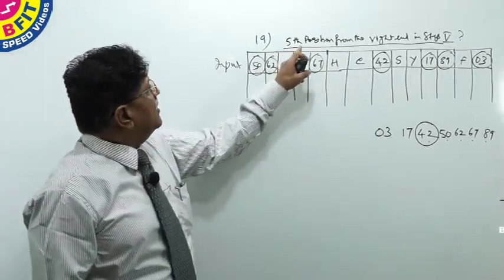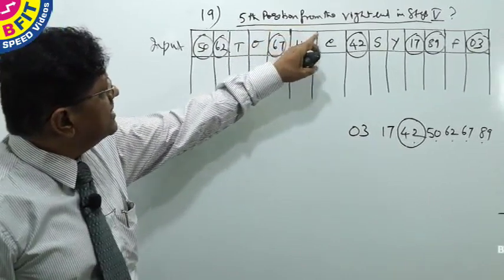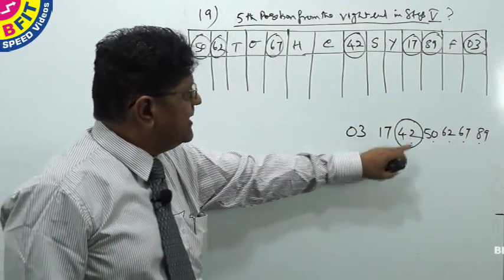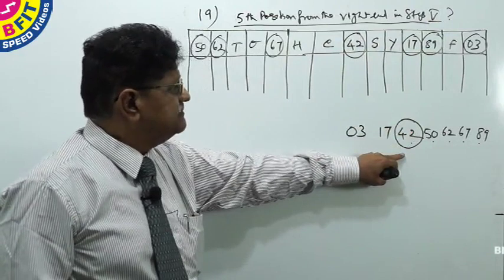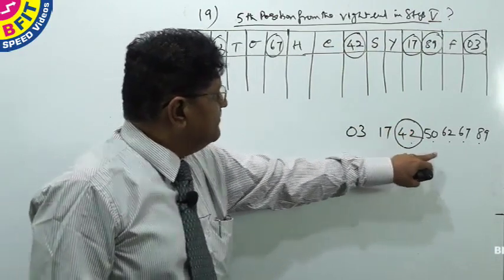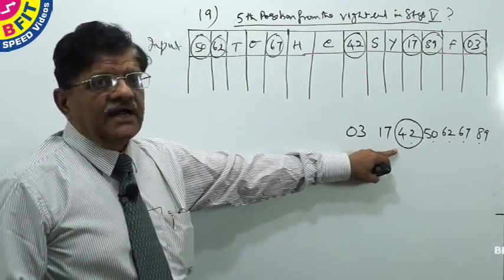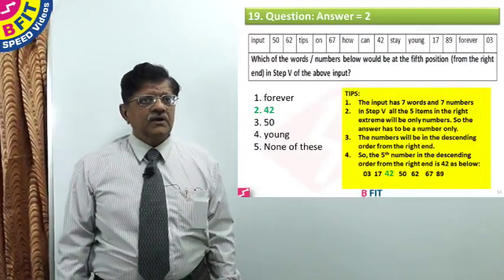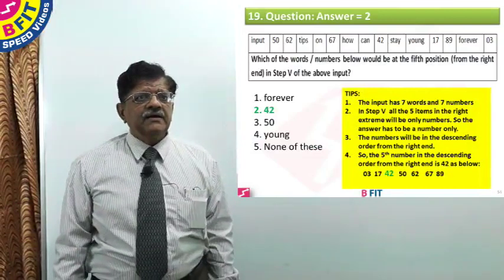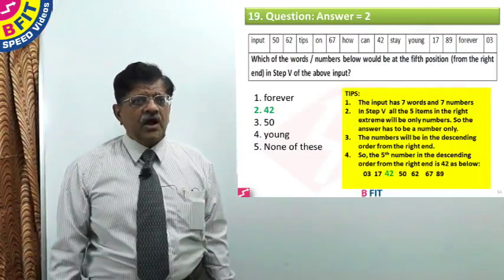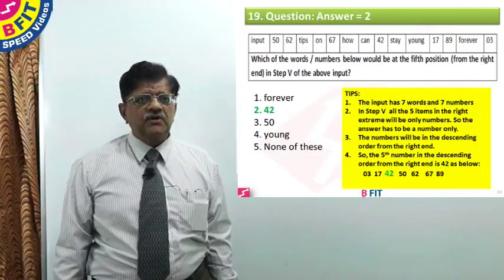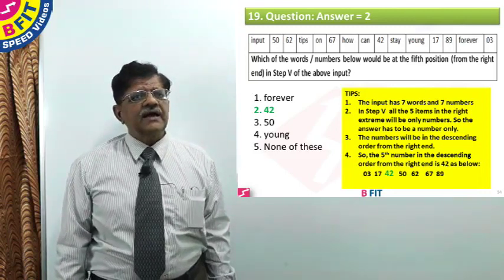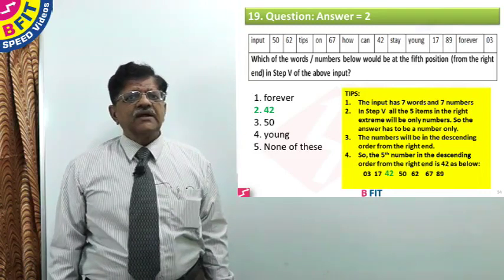The question is: what is the variable in the fifth position from the right end in step five? In step five, all five numbers will be arranged in descending order — it will be a number only, not a word. Whatever is the fifth number in descending order, that will be the answer. So here the answer is 42. For question number 19, the options forever, young, and none of these are all wrong. The correct answer is 42, because it is the fifth number in descending order from the right end — option 2.